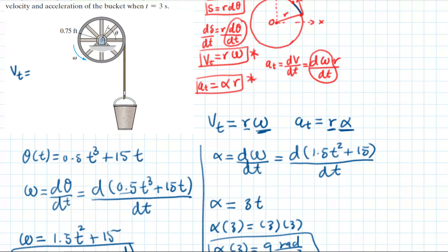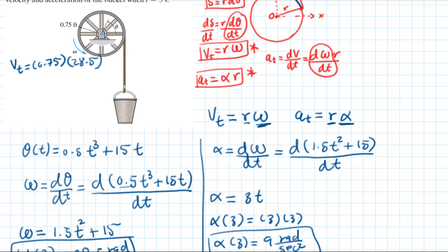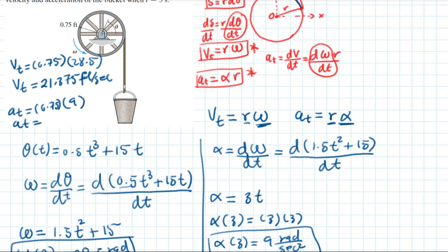Now applying our equations: the tangential velocity equals the radius (0.75 feet) times ω (28.5 rad/s), giving v_tangential = 21.375 feet per second. The tangential acceleration equals the radius (0.75 feet) times α (9 rad/s²), giving a_tangential = 6.75 feet per second squared.